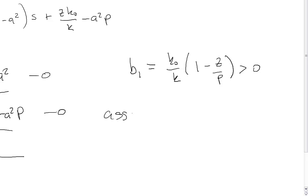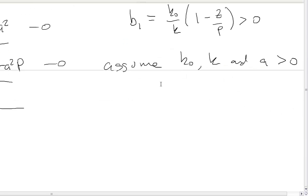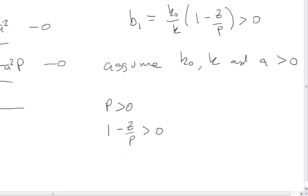And B1 here is given by this term over here. I went ahead and made the assumptions, just to make the problem a little more tractable, that K-naught, K, and A are all positive. So if we make that assumption, then we can reduce our criterion down to that P has to be positive.